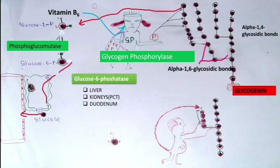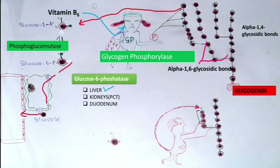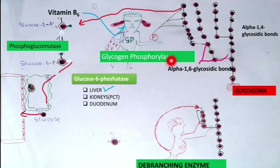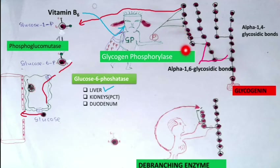Glucose-6-phosphatase is found mainly in the liver, kidneys (particularly the proximal convoluted tubule), and duodenum — but the most important location is the liver. Glycogen phosphorylase cleaves alpha-1,4 bonds until four glucose molecules remain on a branch.